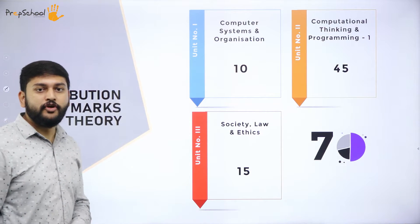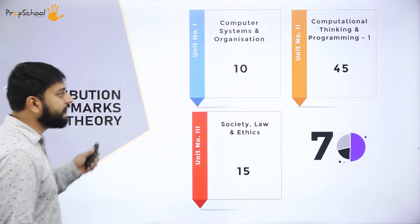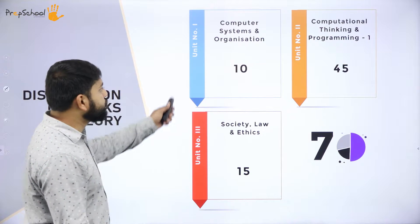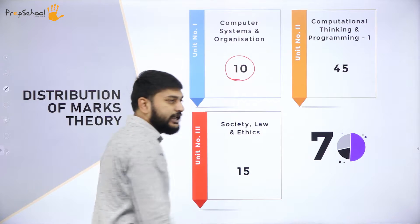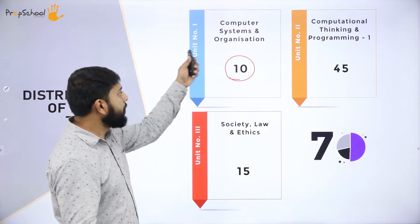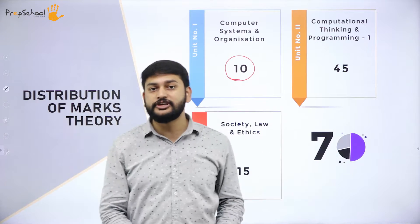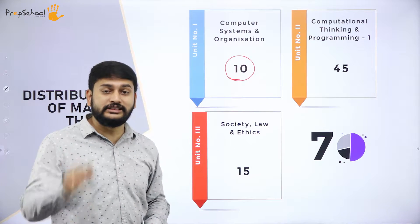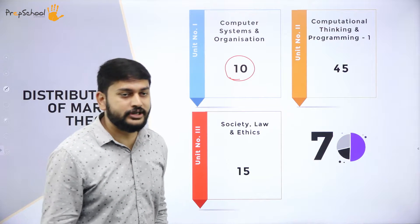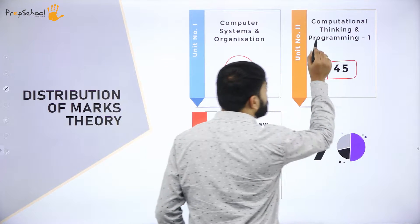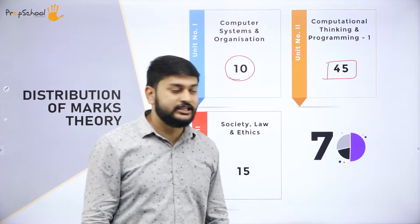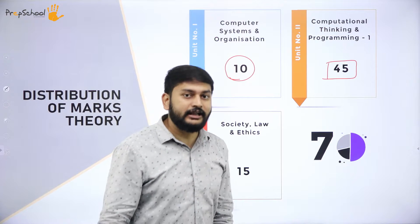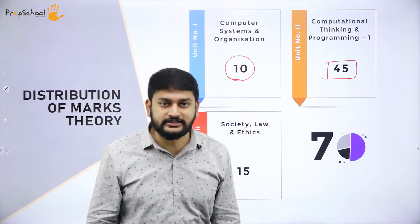This is the marks distribution for theory. You have three units. The first unit is computer system and organization, worth 10 marks — covering the basic typical configuration of the computer system. The second unit is computational thinking and programming, where all your Python programming concepts will come, worth 45 marks.